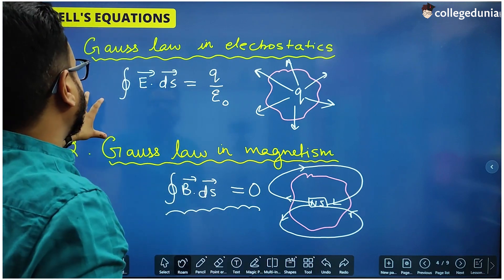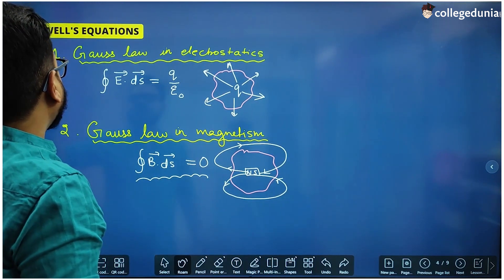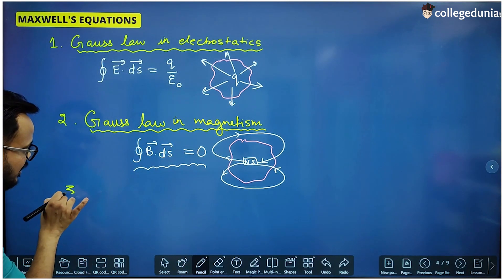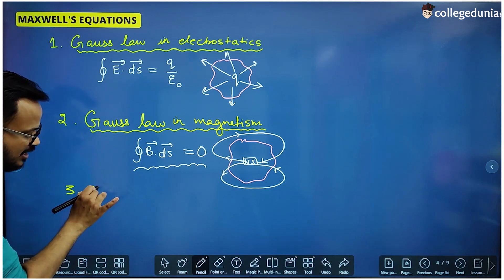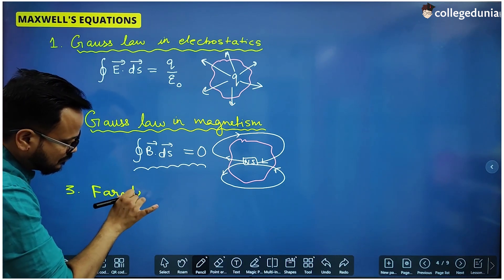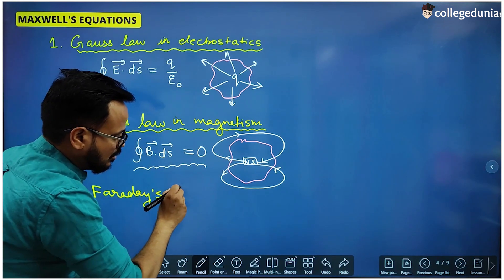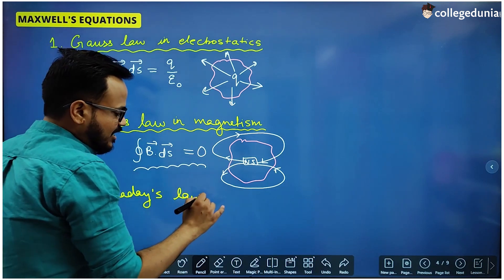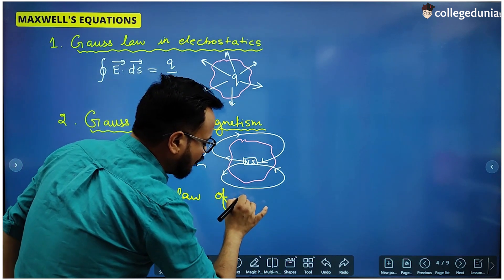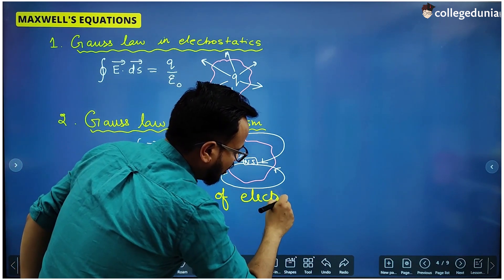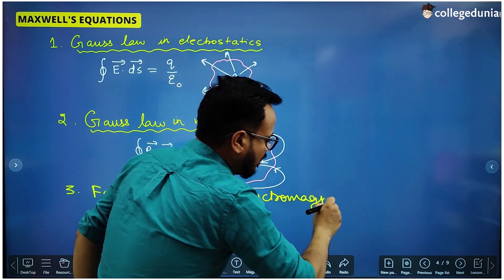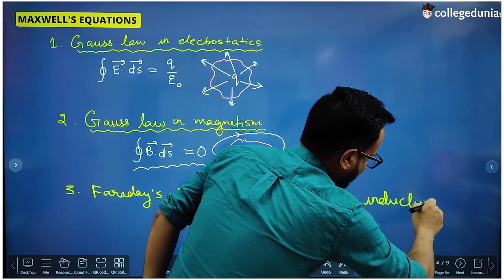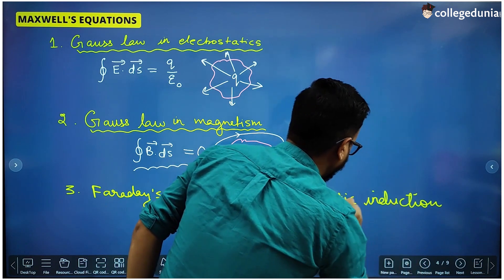This is the second Maxwell equation. From the topic of electromagnetic induction, Maxwell picked Faraday's second law of electromagnetic induction. This is your third Maxwell equation. The first law of Faraday does not contain any mathematical equation, so Maxwell chose Faraday's second law of electromagnetic induction.